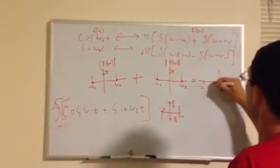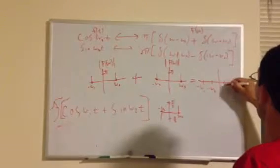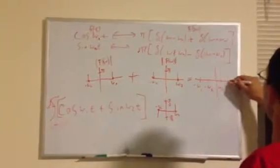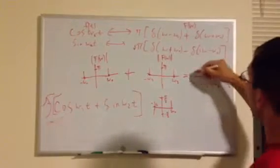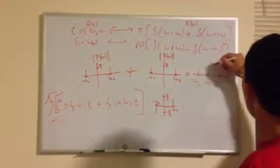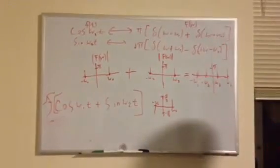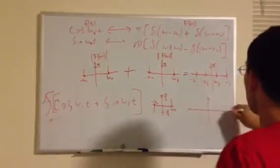So, negative omega 1, negative omega 2, or positive omega 2, positive omega 1, all at pi, right?